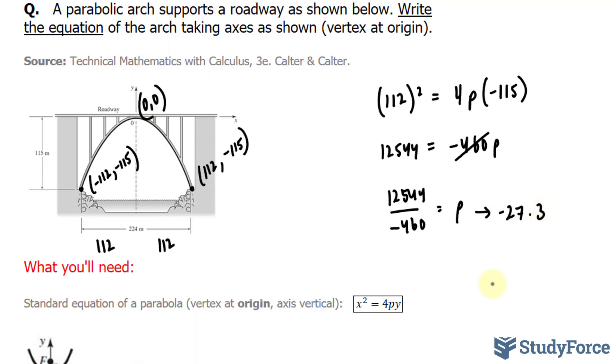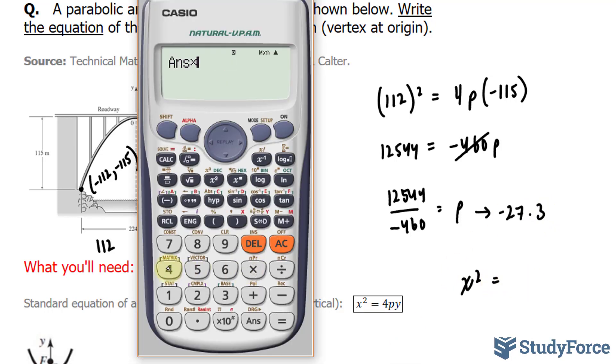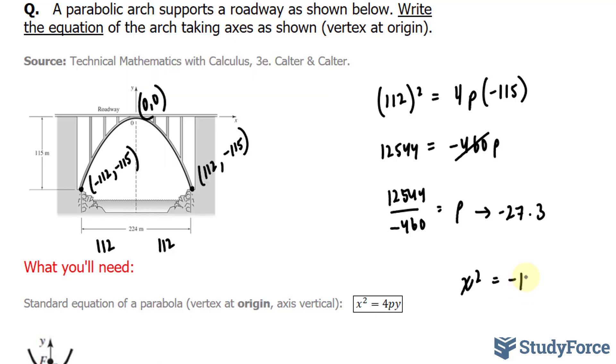Let's rewrite our equation with p this time. We have x squared is equal to 4 times this number. Let's multiply this by 4. Negative 109.1y.